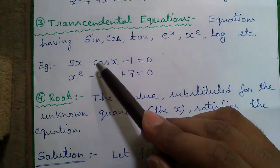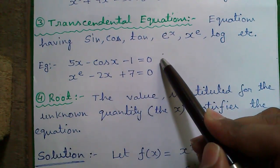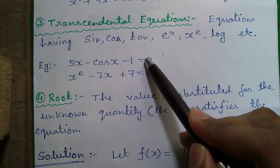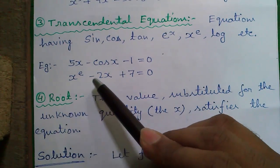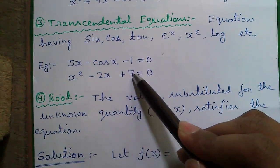For example, 5x - cos x - 1 = 0. So this question I will solve in my next video or x^e - 2x + 7 = 0.